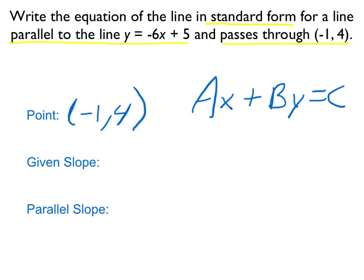The line that's given to us has a slope of negative 6. And since we want something that's parallel to that line, parallel lines have the same slopes. So that means the slope that we'll use for point-slope will also be negative 6.